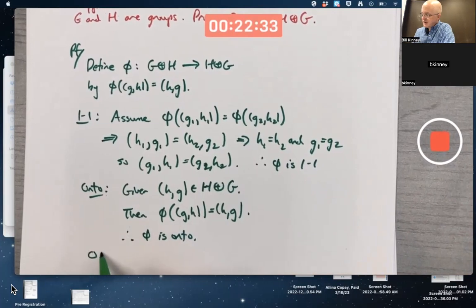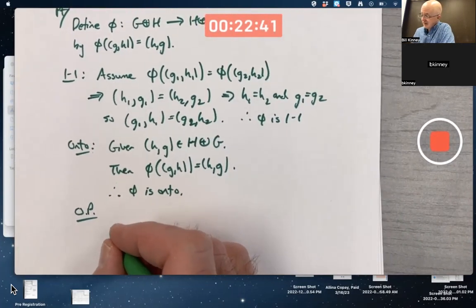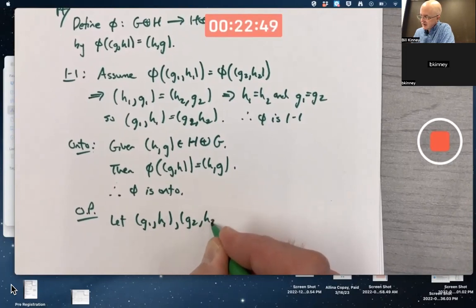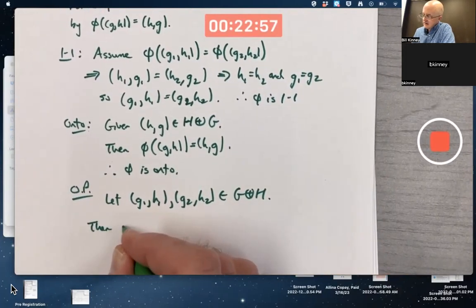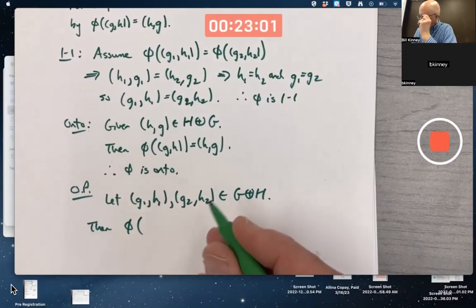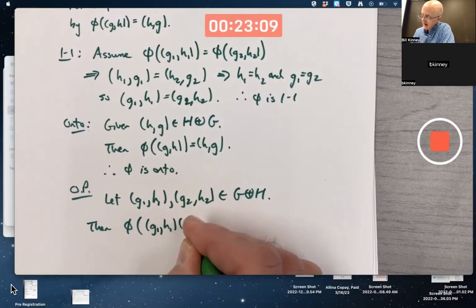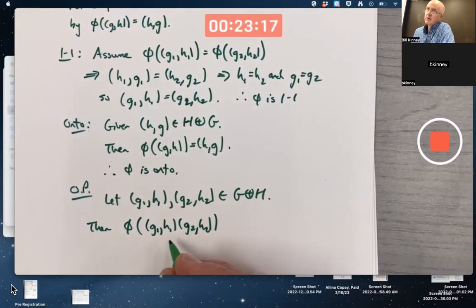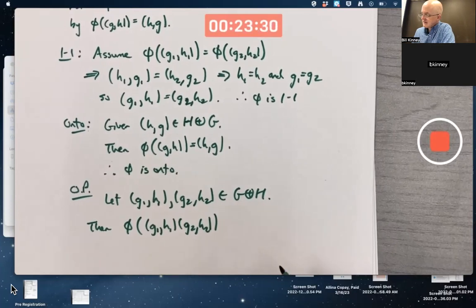So the only thing left is now to show that phi is operation preserving. That one might be the trickiest one, but it shouldn't be too hard, I think. Let G1 comma H1 and G2 comma H2 be ordered pairs in the external direct product of G with H. What do we need to show? We need to show that phi applied to the quote-unquote product of these two ordered pairs. And this is abstract group theory, so we are multiplying them, so to speak. Unlike with what we usually think of with ordered pairs as being vectors where you add them. I mean, if the operation were addition, which we were talking about true vectors in the usual sense here, we would use addition in here. That's the operation, but this is abstract, so we don't have to.